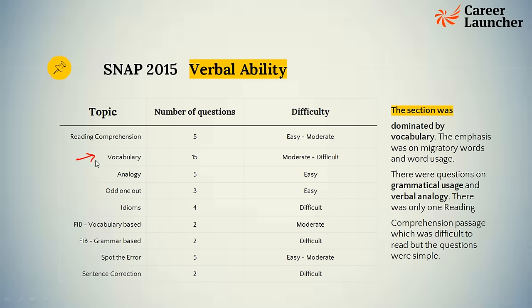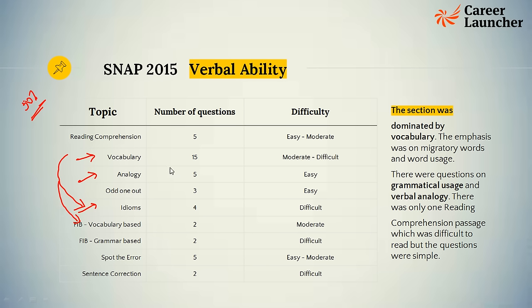Analogy had five questions, idioms which can fall under the vocabulary domain, fill-in-the-blank vocabulary-based, and fill-in-the-blank grammar-based. So if you look at the different ways vocabulary came up, there are about 21 questions — roughly 50% of the entire verbal paper focused on vocabulary. The good thing about SNAP is that the vocabulary is simple and not too difficult, so basic vocabulary knowledge will help you solve these questions. The questions might be expressed in different formats rather than straight antonym or synonym.